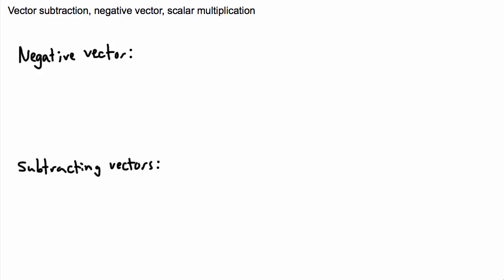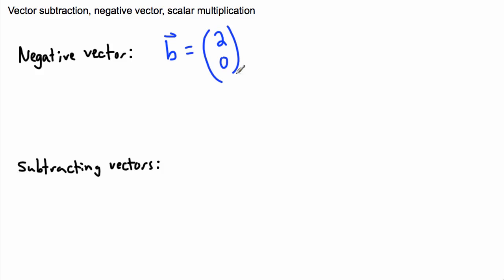Vectors can be added, but they can also be subtracted. So maybe it's important first to talk about a negative vector and what that actually means. A negative vector — let's say I have some sort of vector like b equals 2, 0. Well then what would negative b mean, or what would that actually look like?